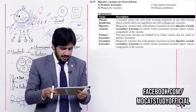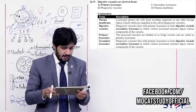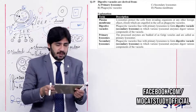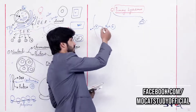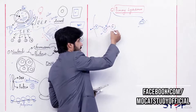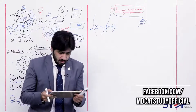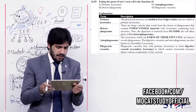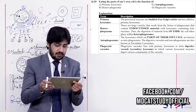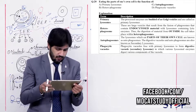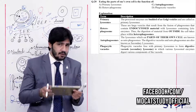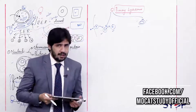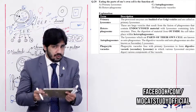Question 20: Digesting the parts of one's own cell is the function of (alpha) primary lysosome, (beta) heterophagosome, (charlie) autophagosome, (delta) phagocytic vacuoles. When the lysosome digests the cell's own organelles, this is autophagy. So the structure performing this function is the autophagosome. Right answer is charlie — autophagosome.